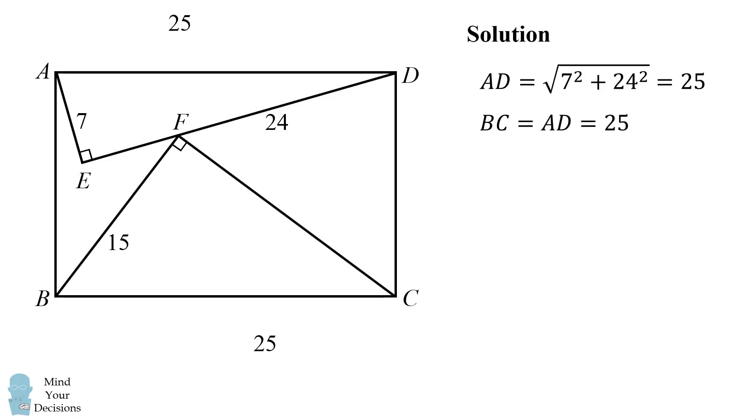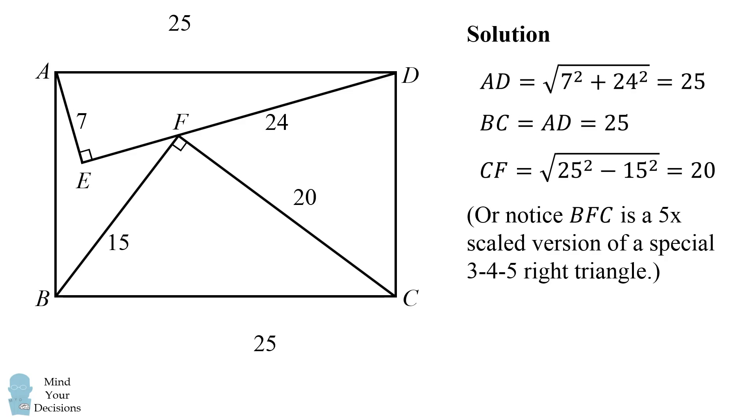Now we'll solve for the other leg of BFC. CF is equal to the square root of the quantity 25 squared minus 15 squared, and that simplifies to be 20. You could also do this because you would notice that BFC is a 5 times scaled version of a special 3-4-5 right triangle. So that would simplify the calculation a little bit. But either way, we have that CF is equal to 20.